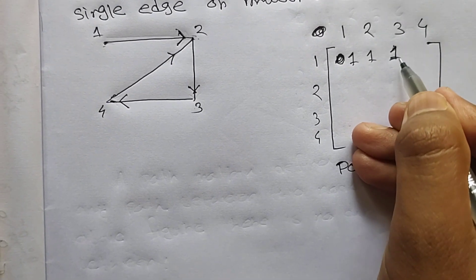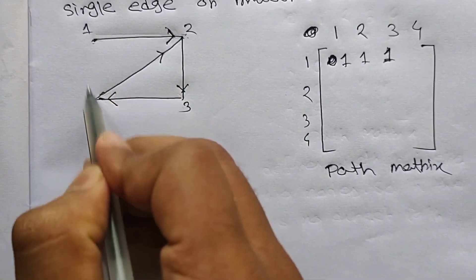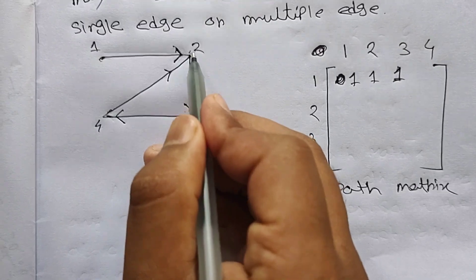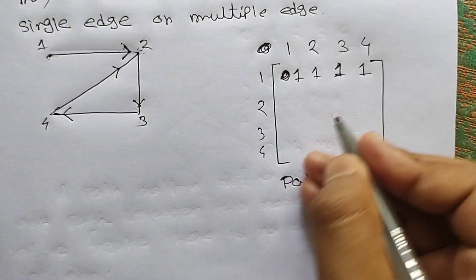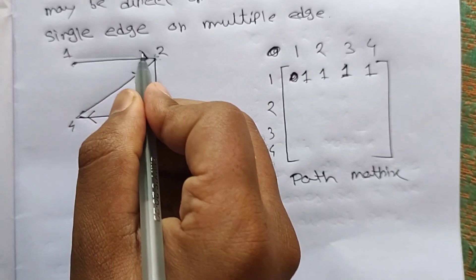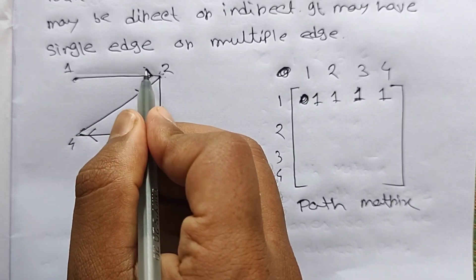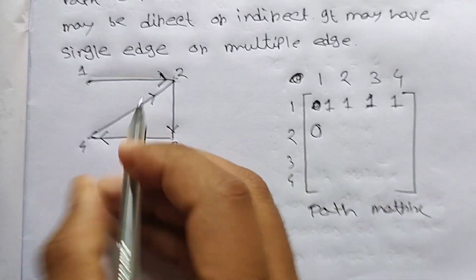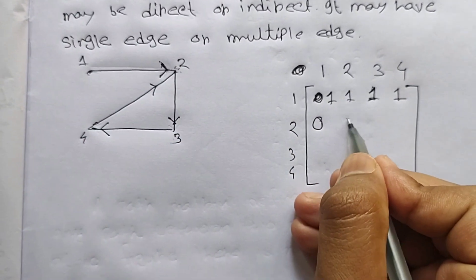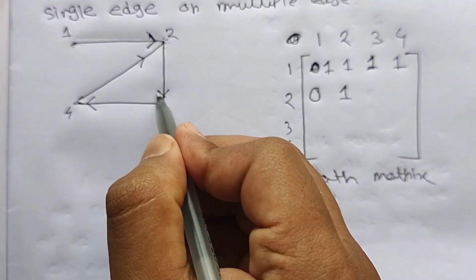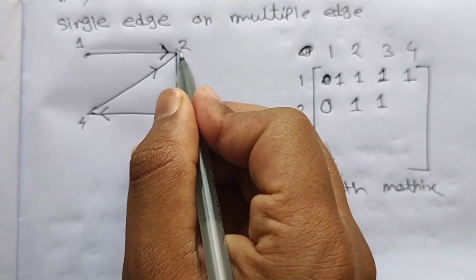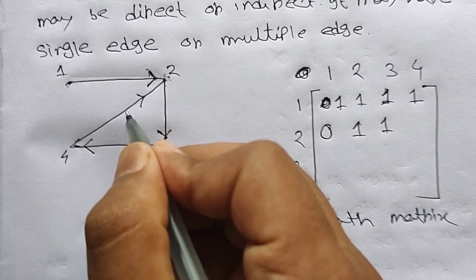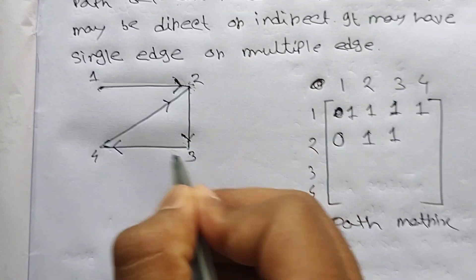2 to 1 — direction is 1 to 2, and we cannot go back, so 0. 2 to 2 — we can reach itself, so 1. 2 to 3 — there is a directed path available, so 1. 2 to 4 — the edge direction is 4 to 2, but we can go 2→3→4, so put 1.